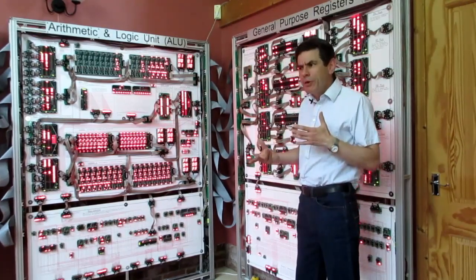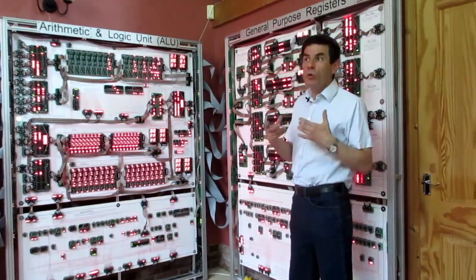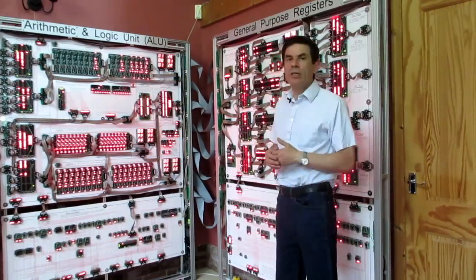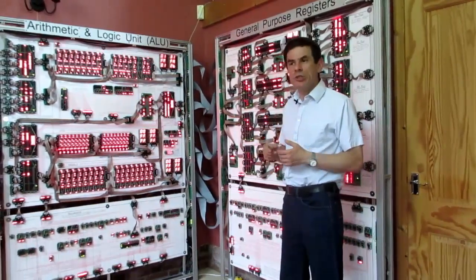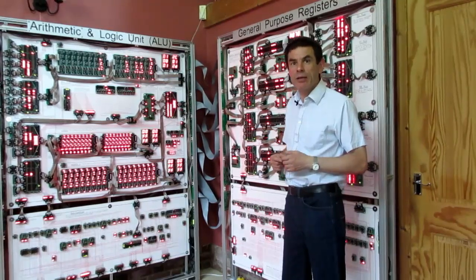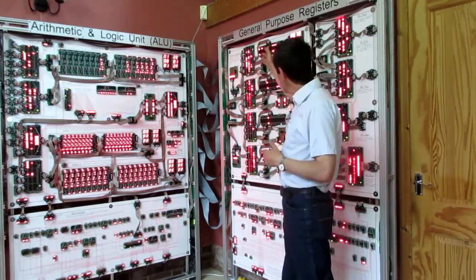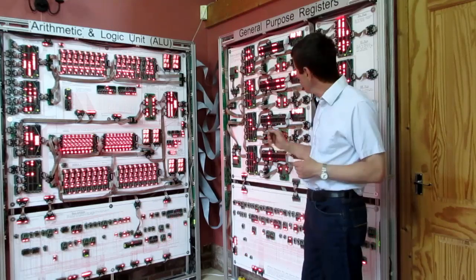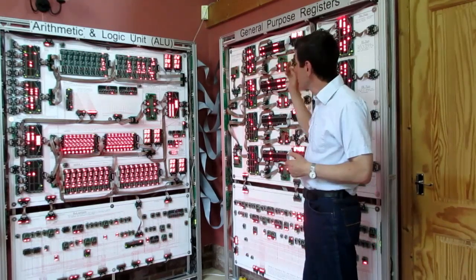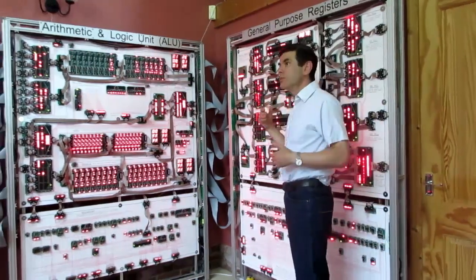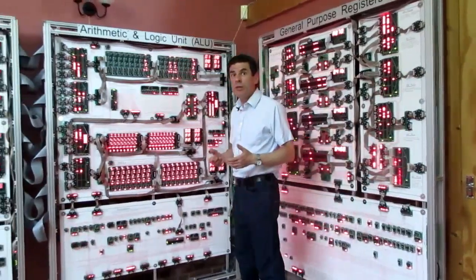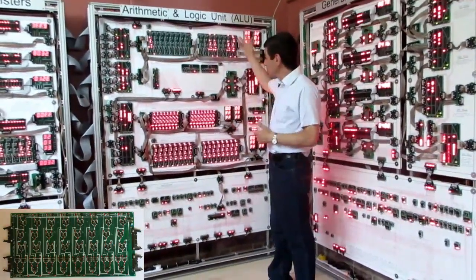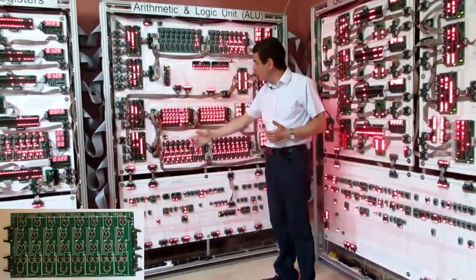So in a processor there are several functional blocks. One example is the registers, which act as a scratch pad when you're carrying out calculations. So these are the registers for the Megaprocessor — we've got four of them here. The next main functional block is the ALU, which carries out all of the arithmetic and logic functions, and that's this area here. So this is the main ALU.